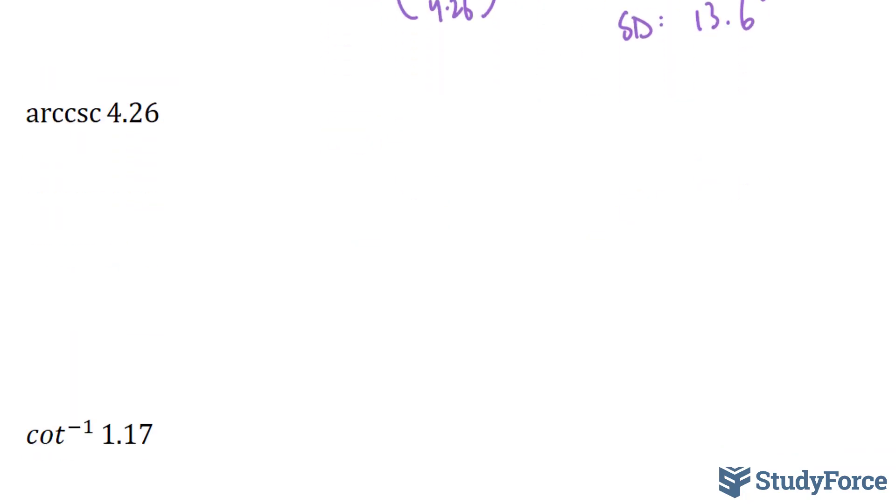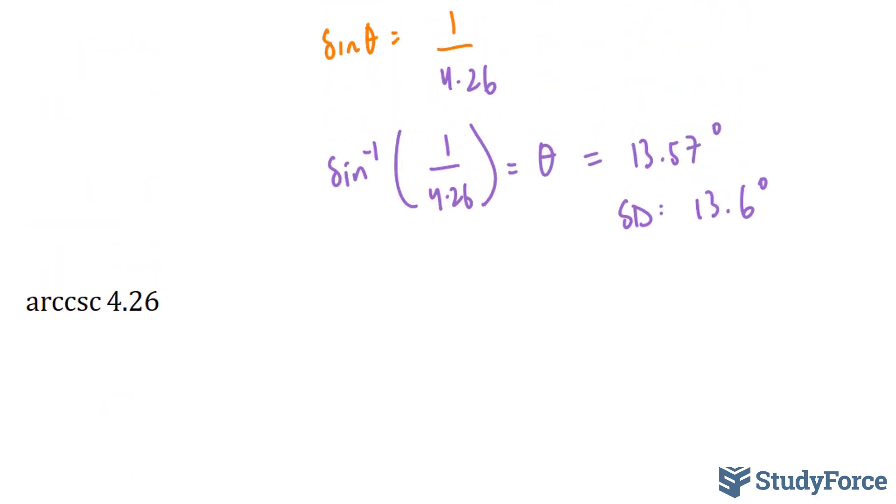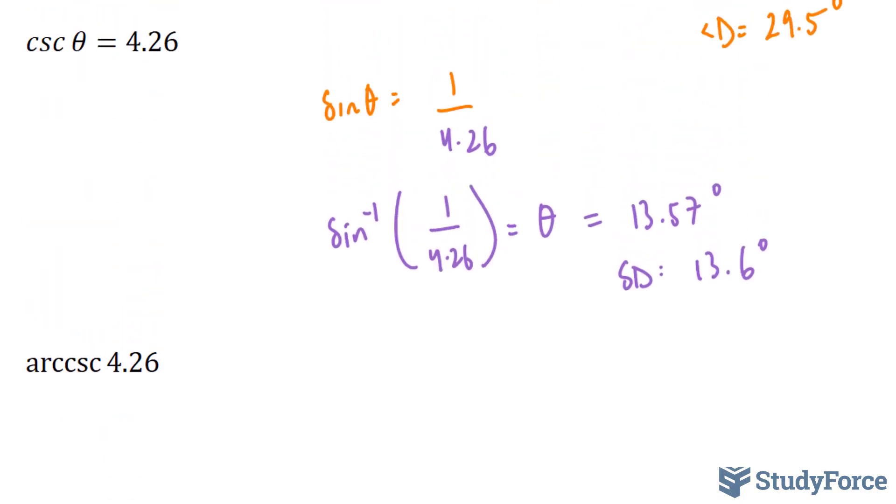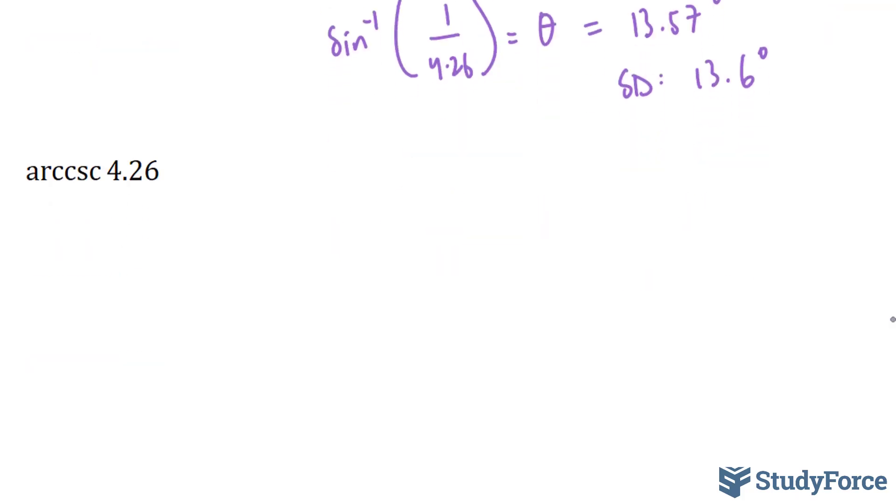Let's try another one. This time they get harder. Here they're asking us the arc cosecant 4.26. Arc cosecant 4.26. Now what does this mean? And this looks awfully different than the previous one. In the previous one we had a theta, but now that theta is no longer there.